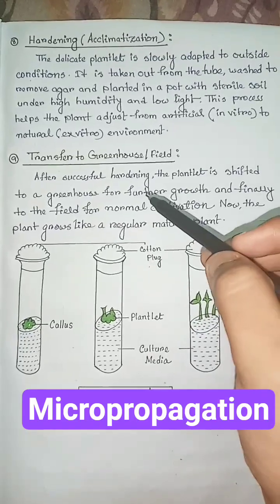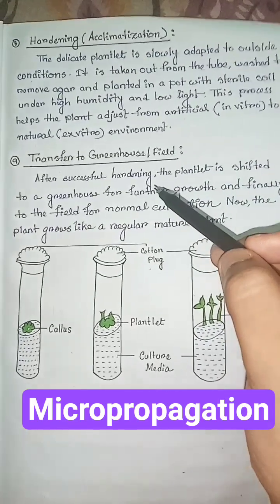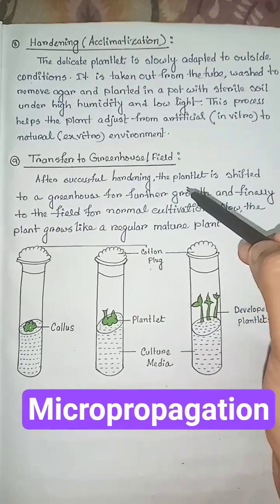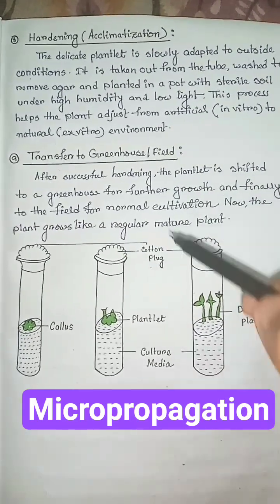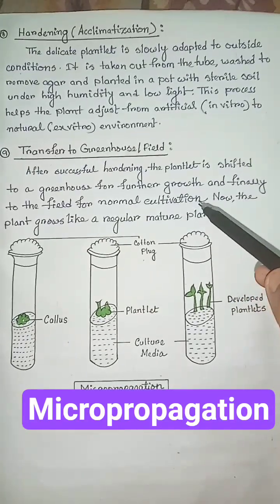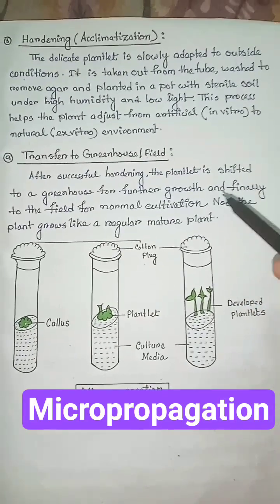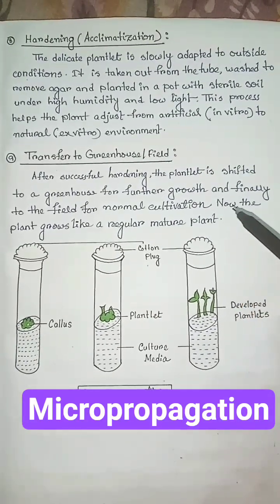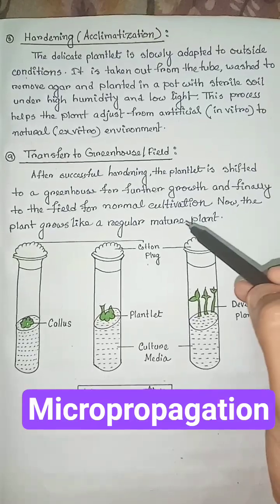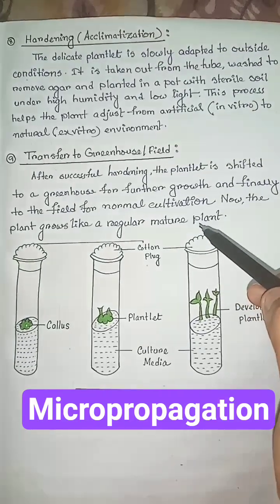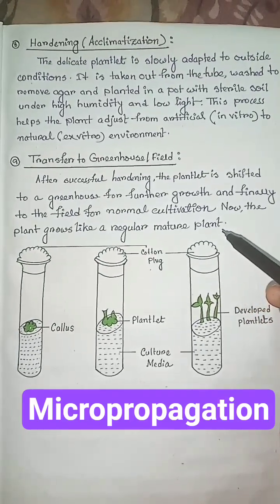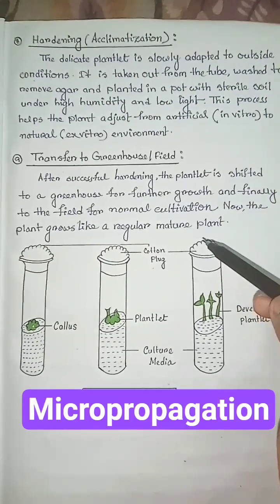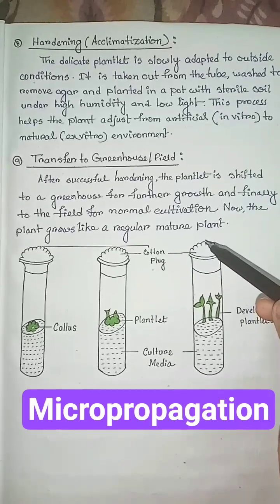Next and final step is transfer to greenhouse and field. After successful hardening, the plantlet is shifted to a greenhouse for further growth and finally to the field for normal cultivation. Now the plant grows like a regular mature plant.